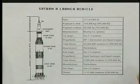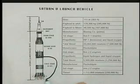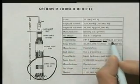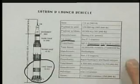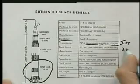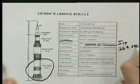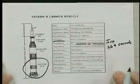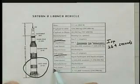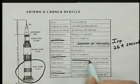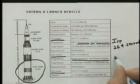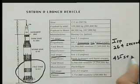The first stage, which is this section, burned kerosene and liquid oxygen and that gave an ISP or specific impulse of 264 seconds approximately. The second and third stage burned liquid hydrogen and liquid oxygen for a higher ISP value of 435 seconds or so.